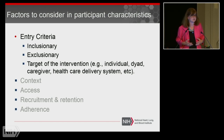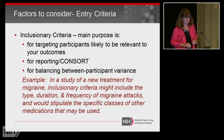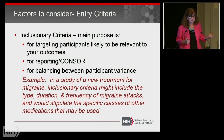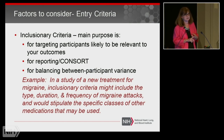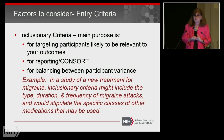The main purpose of inclusionary criteria is different than the main purpose of exclusionary criteria. With inclusionary criteria, the main purpose is trying to identify the participants who are going to be most relevant to the outcomes of your study. You need to report in your CONSORT statement both your inclusionary and exclusionary criteria, and you need to be able to identify individuals that fit your inclusionary criteria.